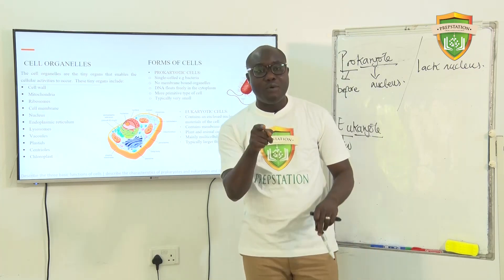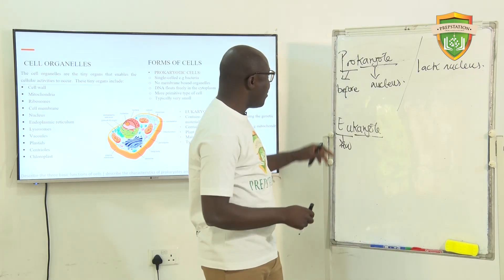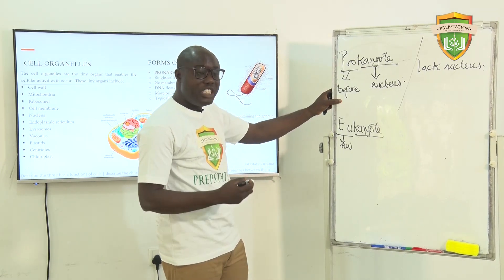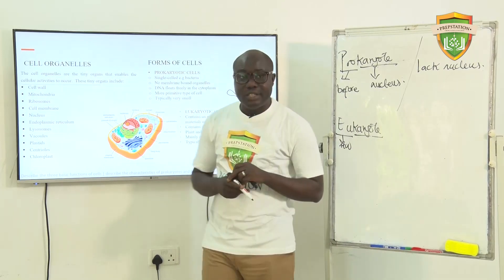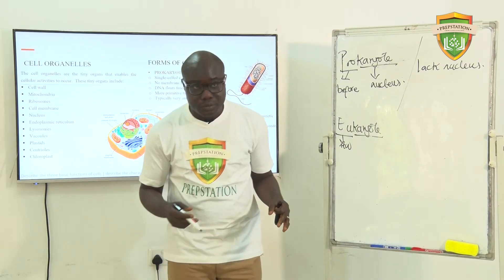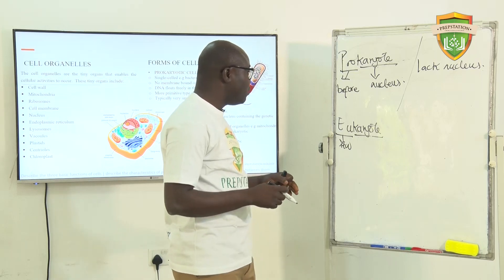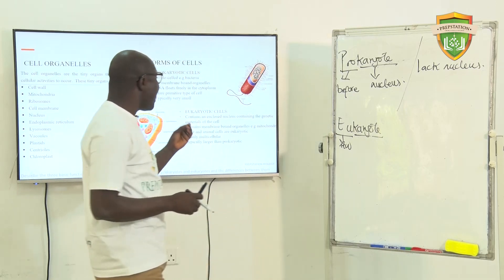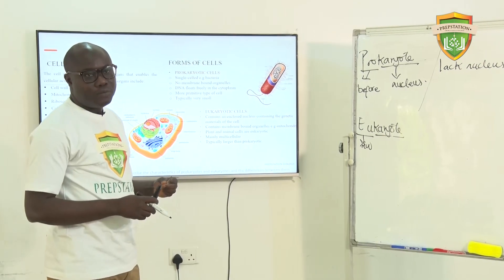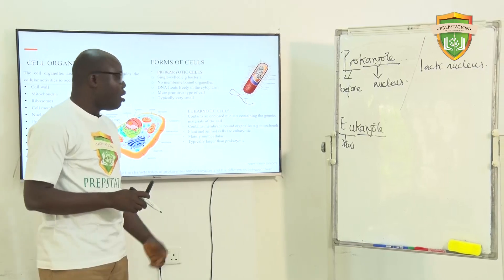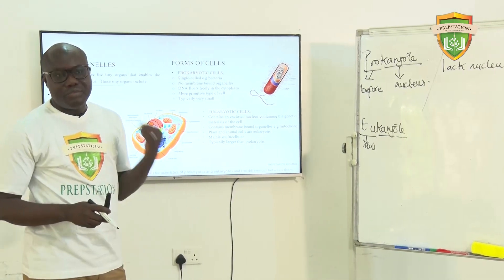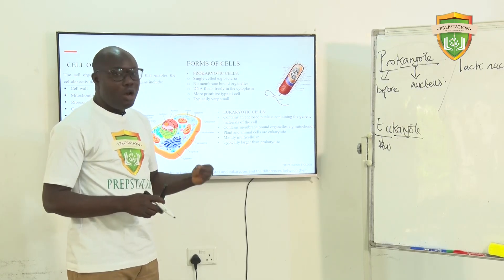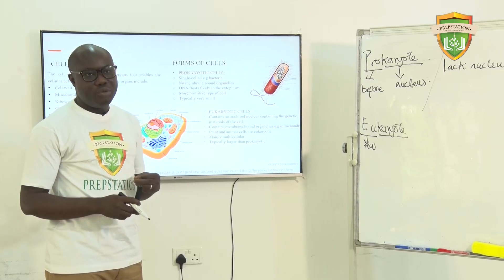Prokaryotic cells are more primitive types of cells. 'Primitive' means they are ancient — these prokaryotic cells are old and not in a superior civilization. They are also typically very, very small. If you imagine a bacterium, it is always very, very small. That's the reason why all prokaryotic cells are microscopic in nature — they are so small you cannot see them with the naked eye.